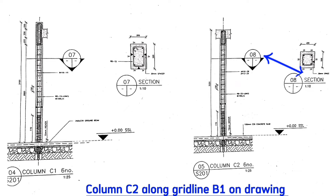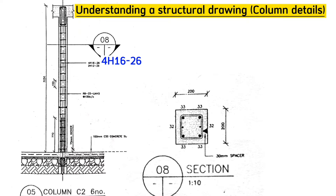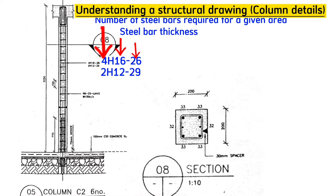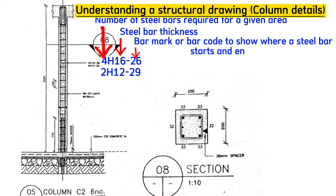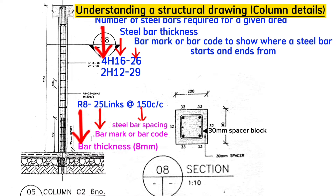Section 8 shows 4H16 steel bars with code 26, and 2H12 steel bars with code 29. This code shows where the steel bars start and end. Links or ties are R8 code 25 at a spacing of 150 millimeters center to center. The column is 200 millimeters by 200 millimeters with 13 millimeter spacer blocks or concrete covers.